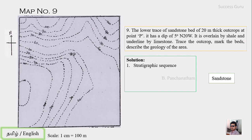The sandstone is overlain by shale and underlain by limestone. So this is the sequence where limestone is the oldest and shale is the youngest. The thickness of the sandstone is given as 20 meters.